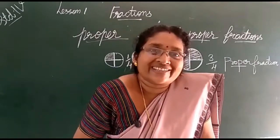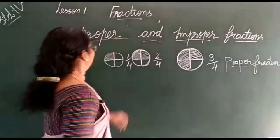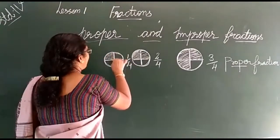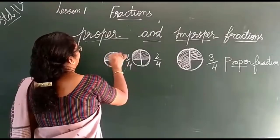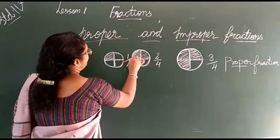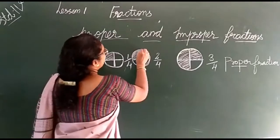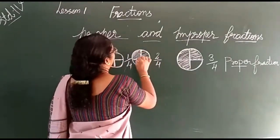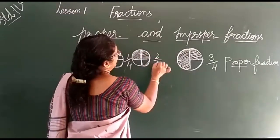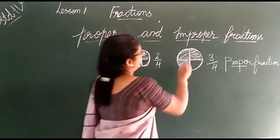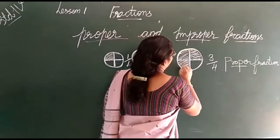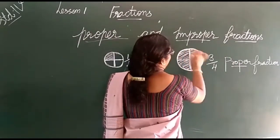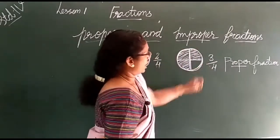What is a proper fraction? Look at this circle. The circle is divided into 4 equal parts and one part is shaded. We can write 1 by 4. Look at this circle — the circle is divided into 4 equal parts, 2 parts are shaded. This is 2 by 4. This circle is divided into 4 parts, 3 parts are shaded. This is 3 by 4.